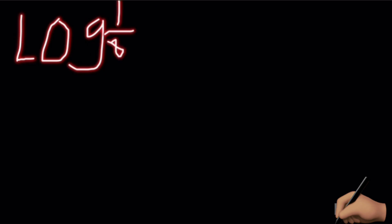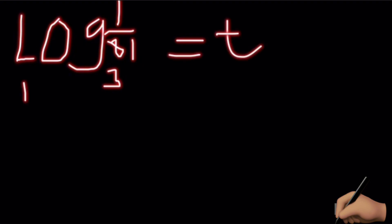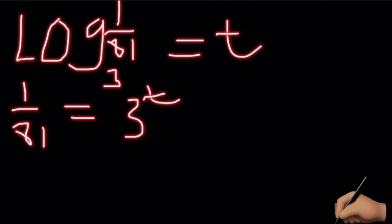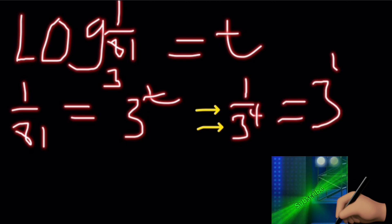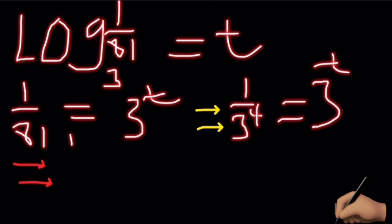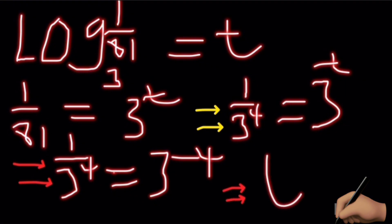Next question: log base 3 of one over 81 is equal to t. We write the expression: one over 81 equals 3 to the power t. Since 81 equals 3 to the power 4, one over 81 is equal to one over 3 to the power 4, which equals 3 to the power negative 4. So our t is now equal to negative 4.